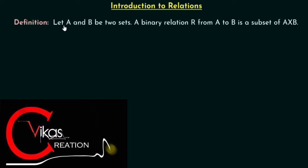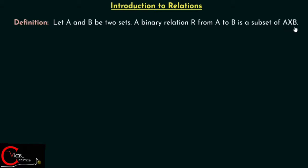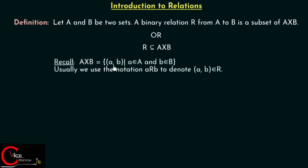Here is the definition of relation. Let A and B be two sets. A binary relation R from A to B is a subset of A cross B. In other words, R is a subset of A cross B, which is the Cartesian product of A and B. Recall that A cross B is the set of all ordered pairs (a, b) where a belongs to set A and b belongs to set B. Usually, we use the notation ARB to denote that (a, b) belongs to R, and we call this as A related to B.